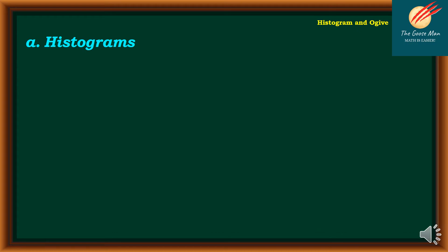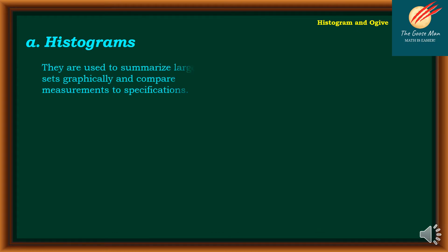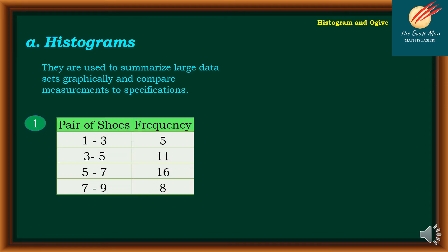Let's talk first about histograms. They are used to summarize large data graphically and compare measurements to specifications. Let's consider Example 1. In our table, we have pairs of shoes as well as the frequency. We have the class interval 1 to 3 with 5 frequency, 3 to 5 with 11 frequencies, 5 to 7 with 16, and 7 to 9 with 8.